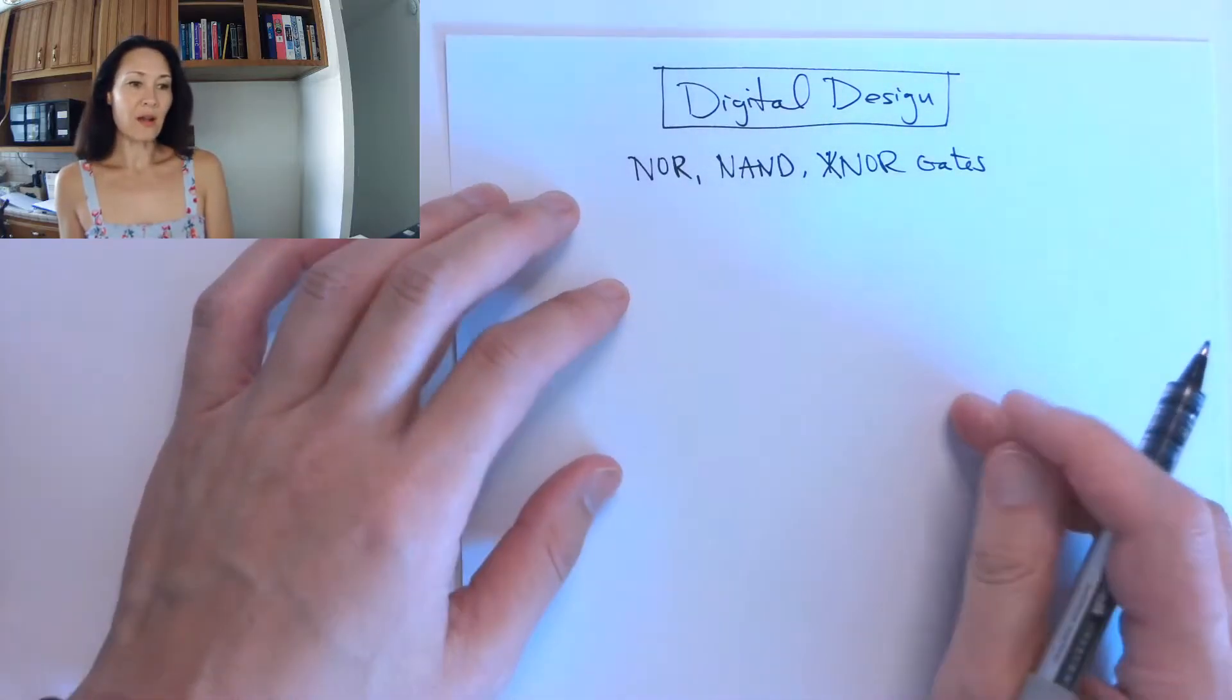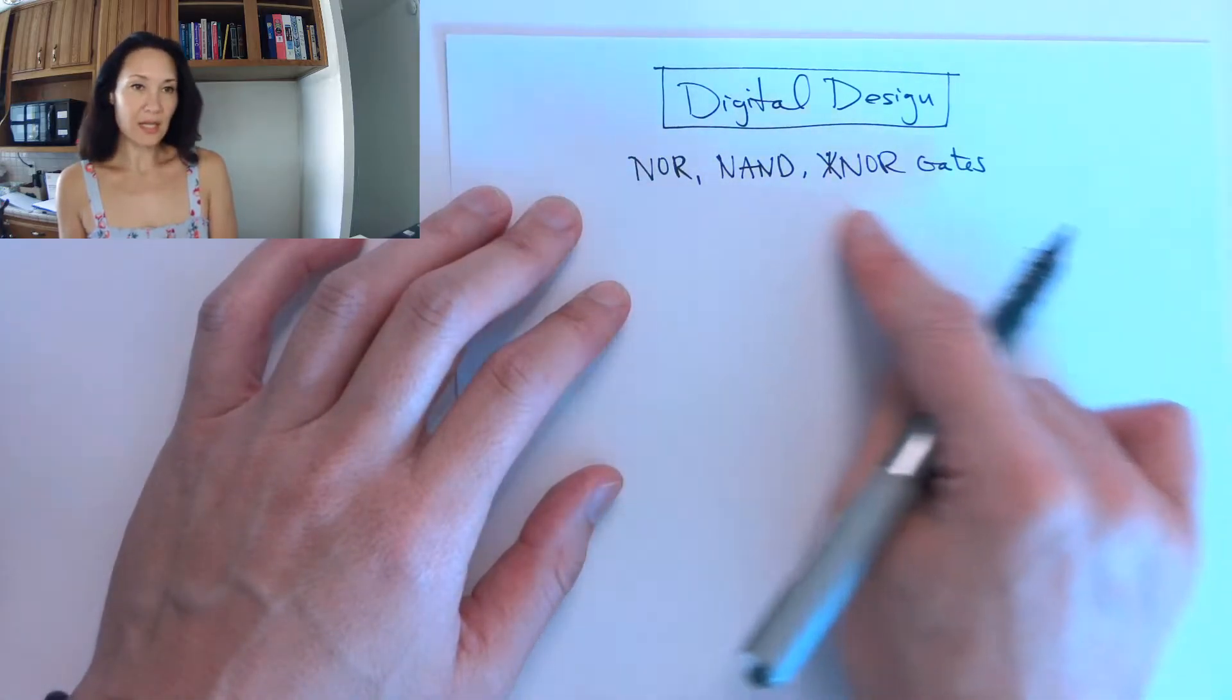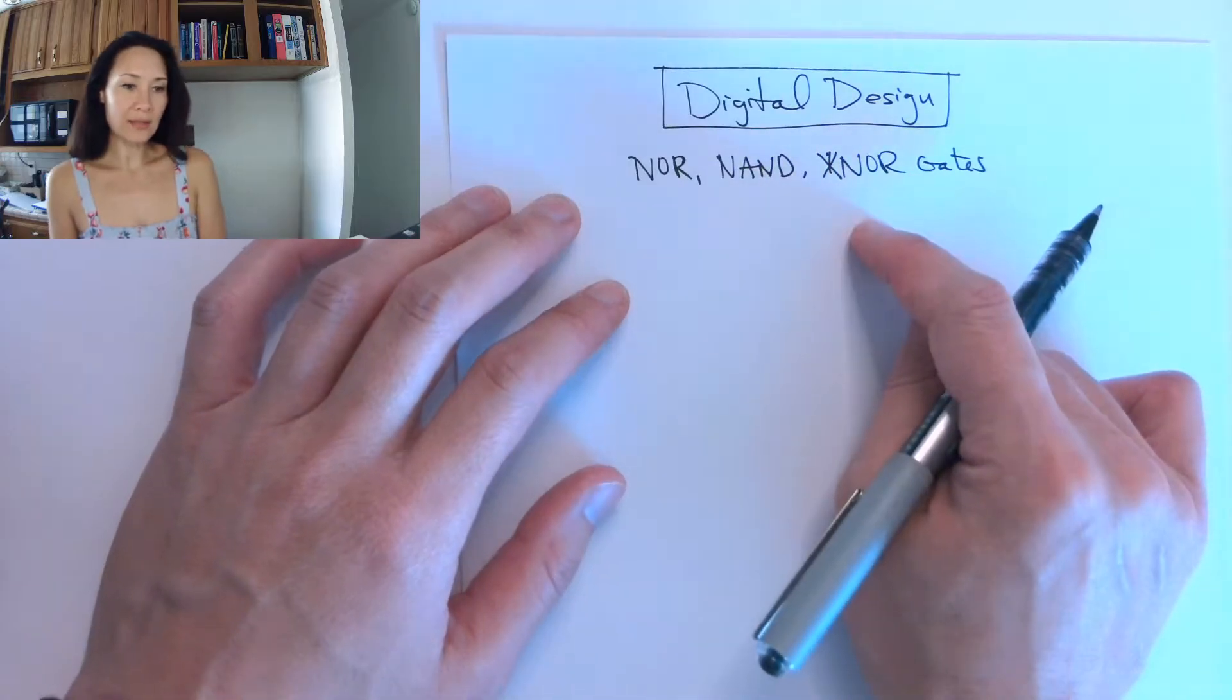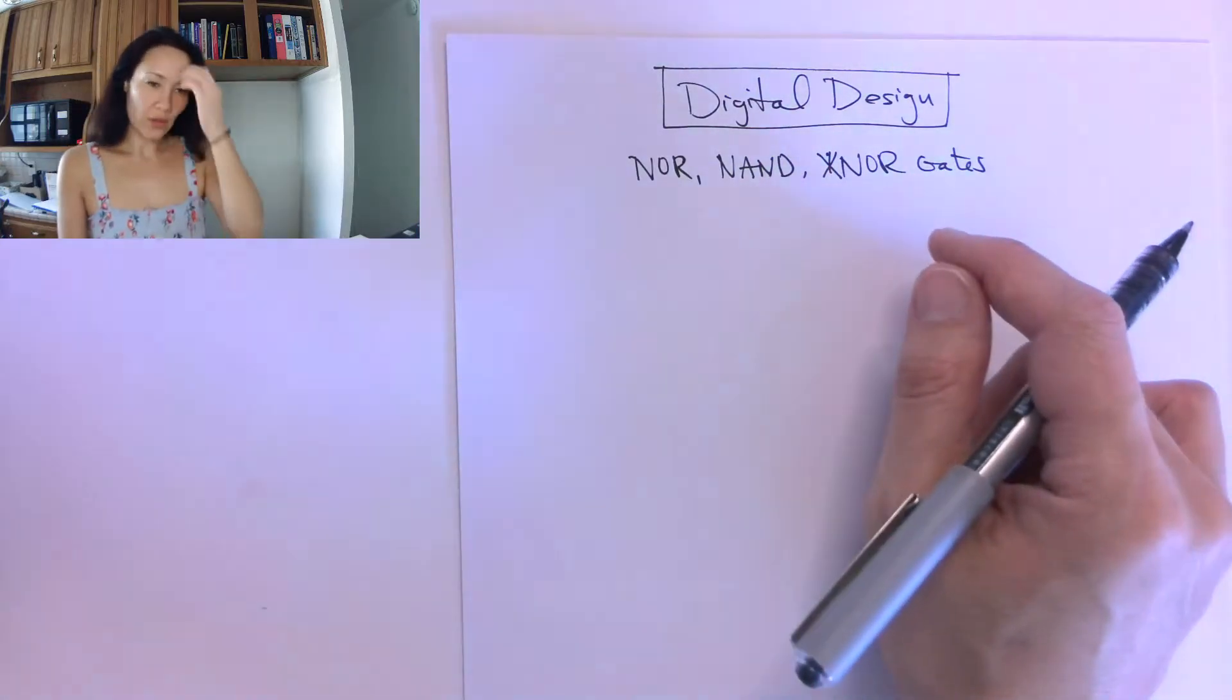What these are, are basically if we want to negate the functionality of an OR, an AND, or an XOR, we can put an inverter at the end.